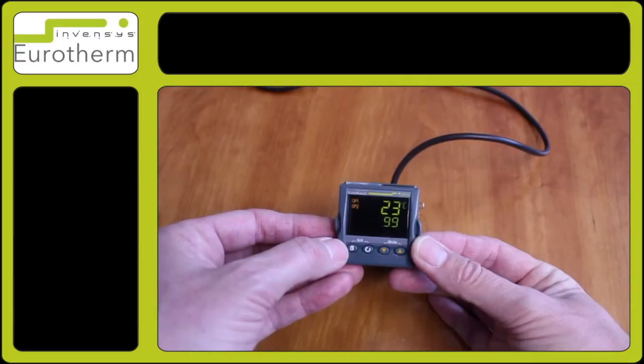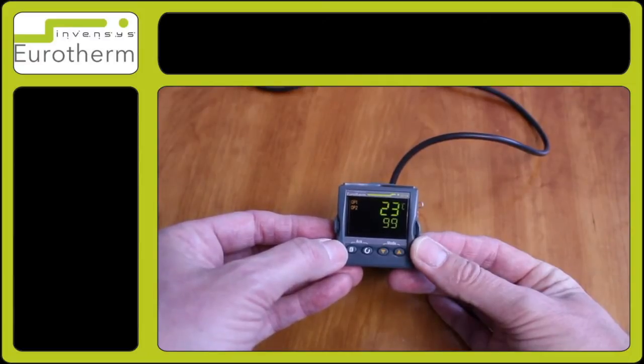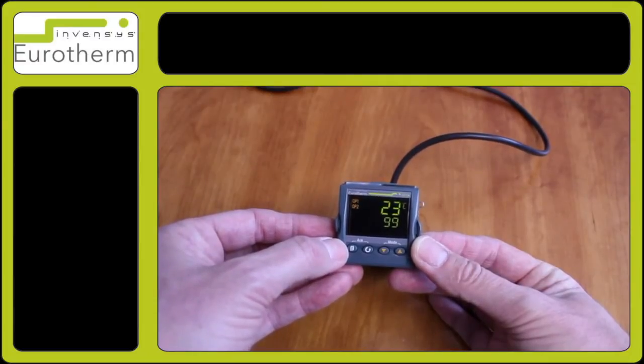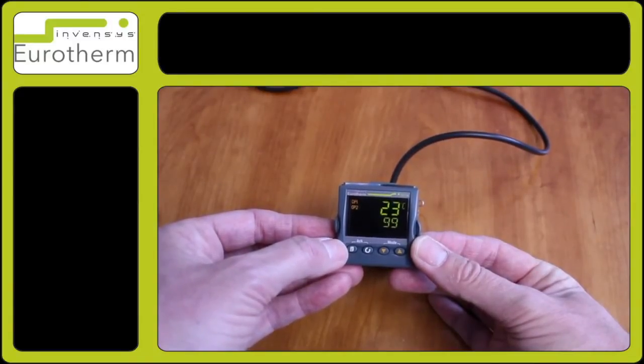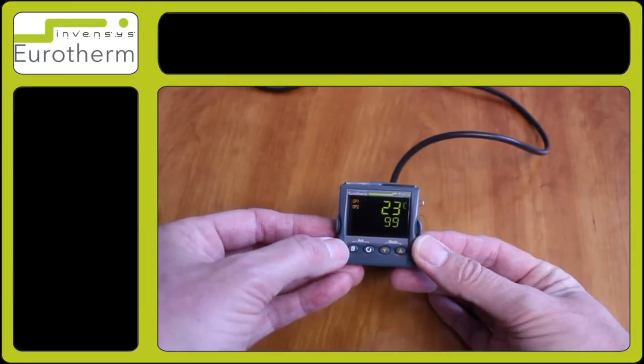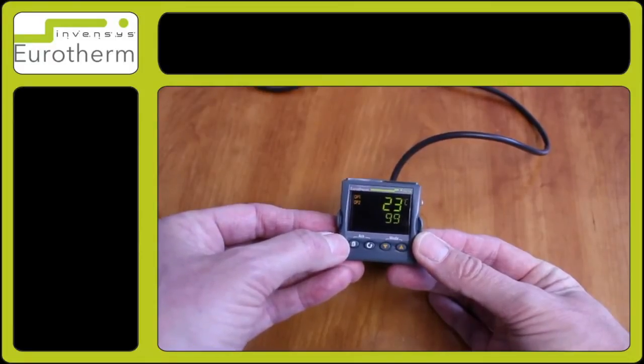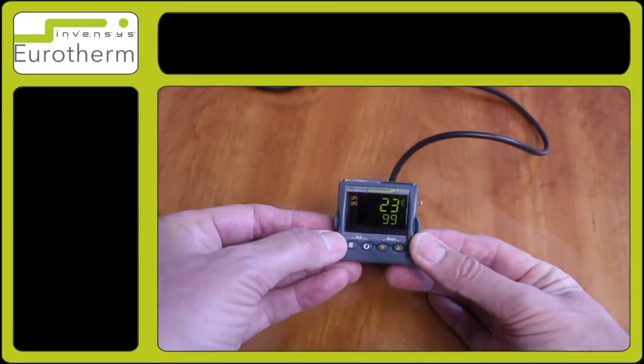If you require the output to be at zero whilst the temperature is below the set point, then you will require direct acting. To change this particular value, press and hold down the page key until level 3 appears.